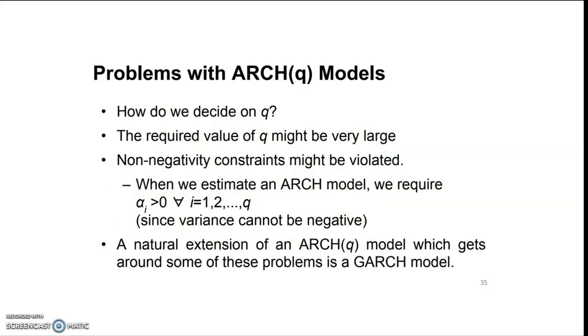There are certain problems with the ARCH(q) models because the question is: how can we decide on q? The required value of q might be very large sometimes, and then non-negativity constraints might be violated. A natural extension of an ARCH(q) model which gets around some of this problem is a GARCH model.